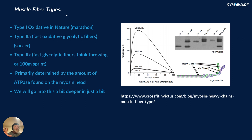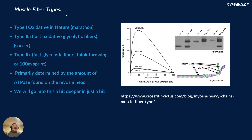Muscle fiber types — shout out to Dr. Andy Galpin, one of the leading researchers doing tons of work on fiber type. Most exercise scientists talk about Type I fibers, which are oxidative in nature — used for marathons, walking, sitting up. Type IIa fibers are fast oxidative-glycolytic, somewhere in between, using both oxygen and the glycolytic system — soccer players are a perfect example. Type IIx are fast glycolytic fibers, the fastest — think throwers, sprinters, weightlifters, anyone moving really fast for a short period.